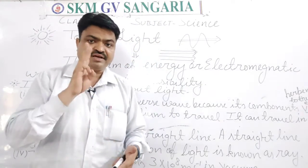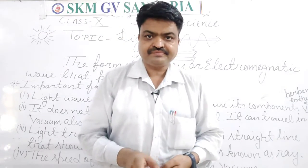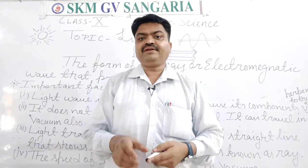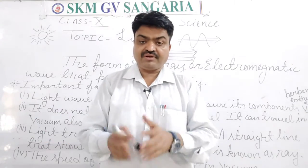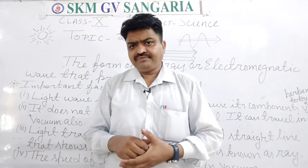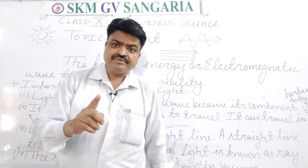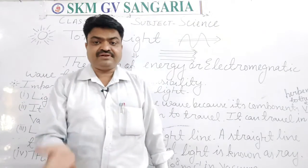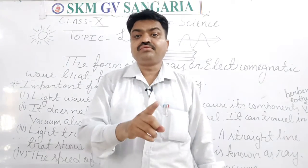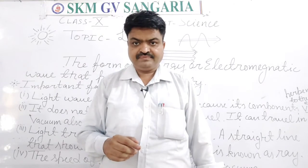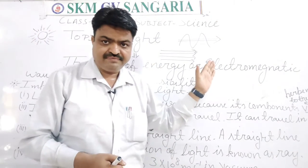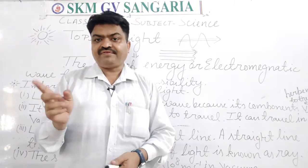So there are three types of rays: incident ray, reflected ray, and refracted ray. For example, when light passes through a glass slab, it changes its medium, and the light rays also change their direction. This change of direction happens due to the difference in density. We will discuss this further.